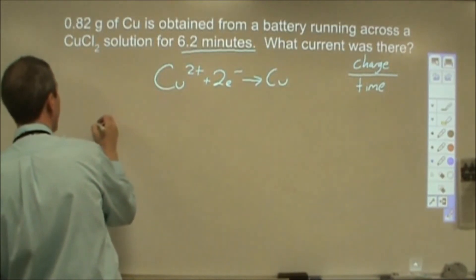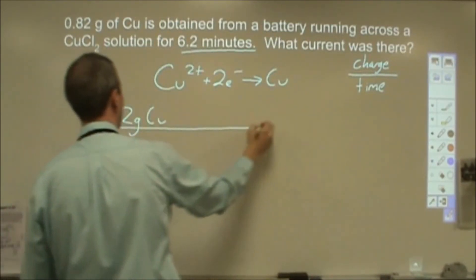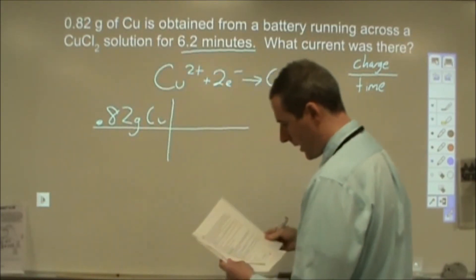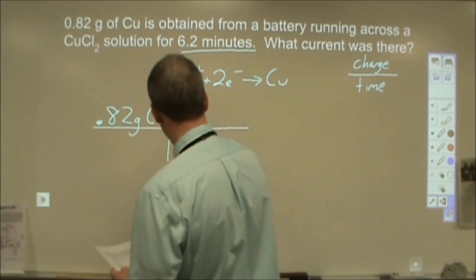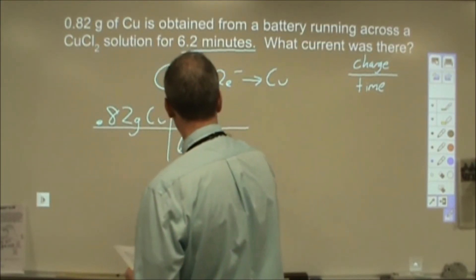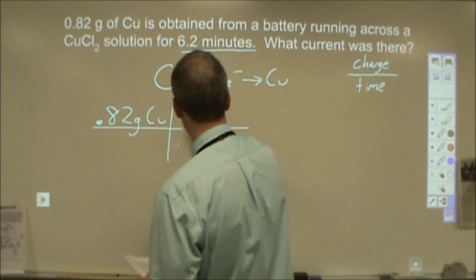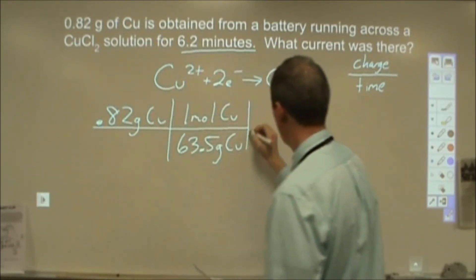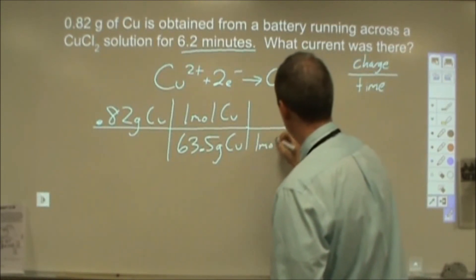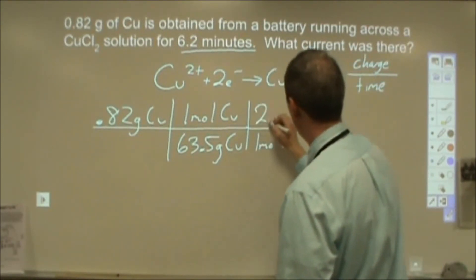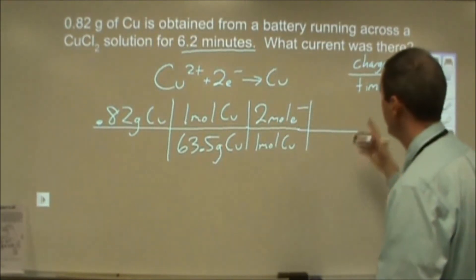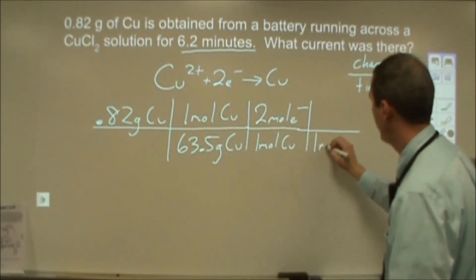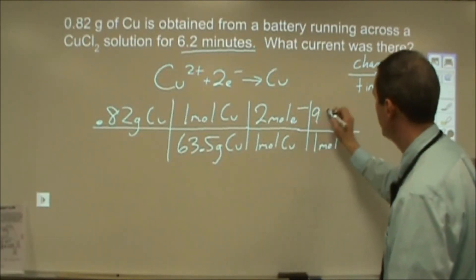Then, what we'd want to do is we'd want to work backwards to figure out our charge. So 0.82 grams of copper. And we're going to go ahead and convert that into moles. And then we're going to say that each mole of copper required two moles of electrons. Okay, now we're getting really close to charge. We want to figure out the coulombs. So now we're going to use Faraday's constant. One mole of electrons is this much charge.